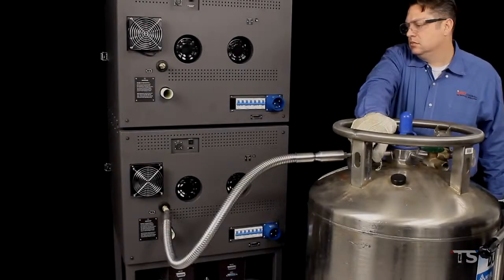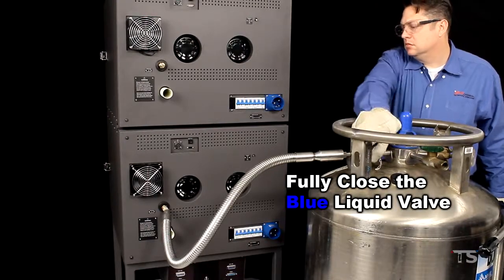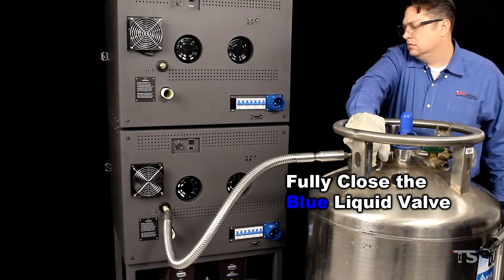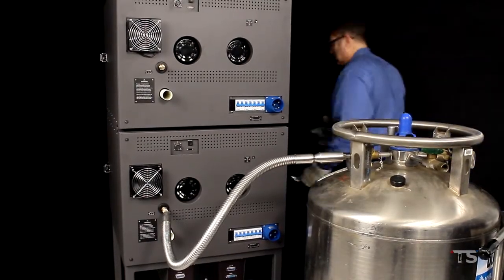When you are ready to disconnect your LN2 lines, you will need to start by fully closing the blue liquid valve at the Dewar. This will shut off the flow of LN2 to your chamber.